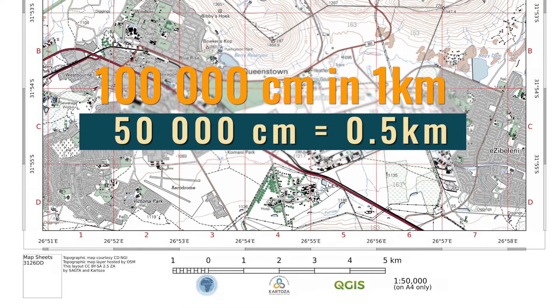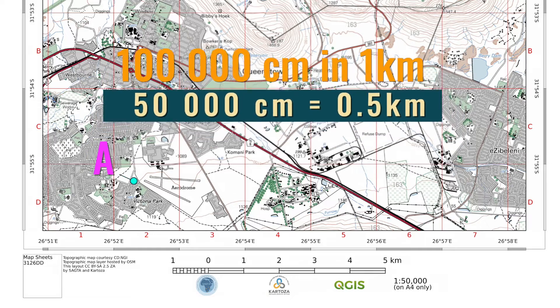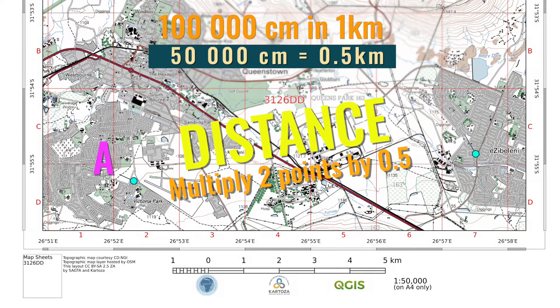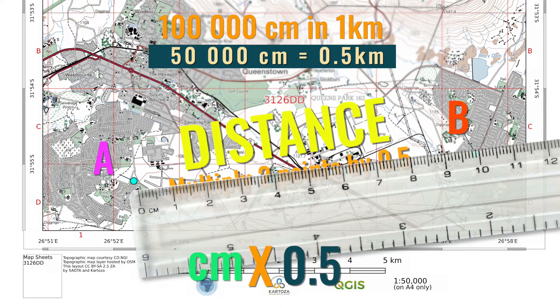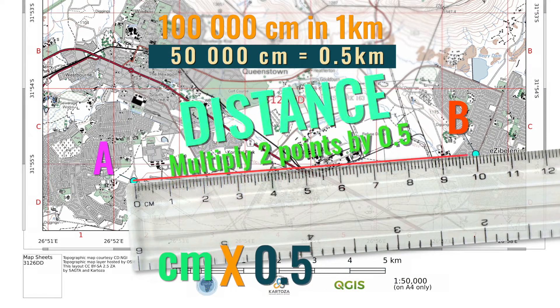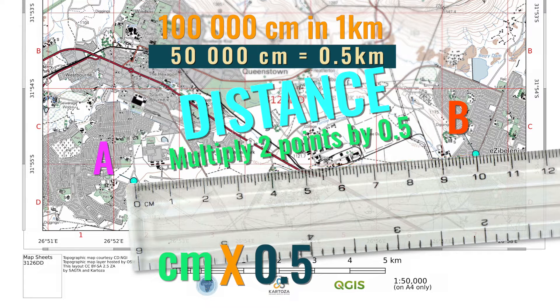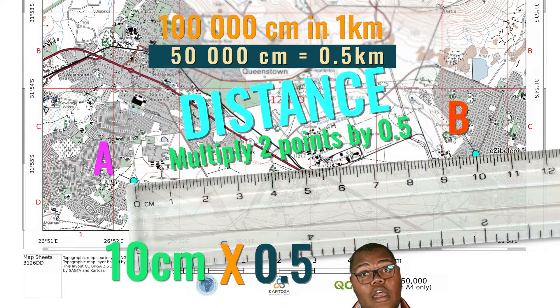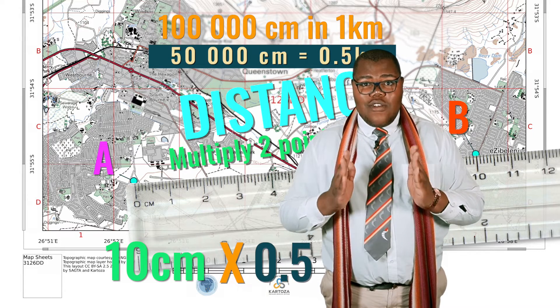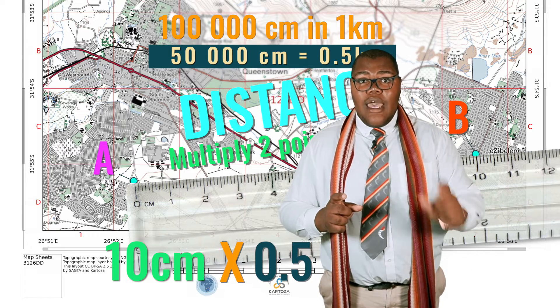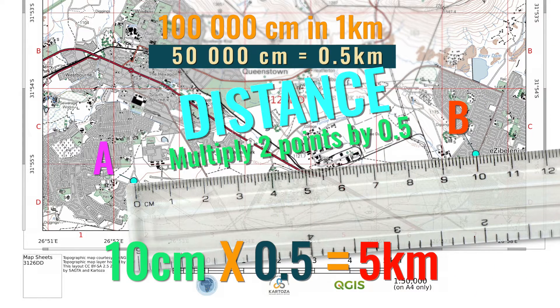Therefore, 50,000 centimetres equal to a half a kilometre. This means that all we have to do to get the kilometres on the ground once we have measured the distance in centimetres between two points on the map is to simply multiply by 0.5 by a half. For example, if I have place A and place B, and the distance on the map from place A to place B is 10 centimetres. If I am to calculate the distance in reality, in kilometres, all I need to do is to multiply 10 centimetres by 0.5 which is equal to 5 kilometres.